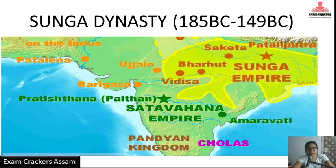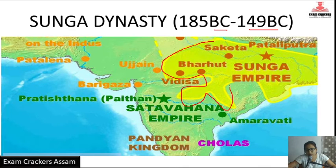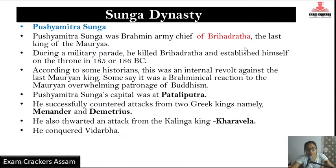So today I will discuss the Sunga Dynasty. The Sunga Dynasty existed from 185 BC to 149 BC - this is shown on the map, with the yellow region representing the Sunga Dynasty's territory. Let's discuss the first ruler of the Sunga Dynasty - this is Pushyamitra Sunga. Pushyamitra Sunga is the first ruler of the Sunga Dynasty.